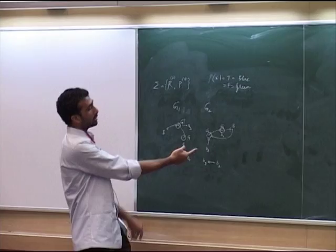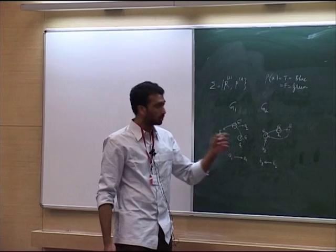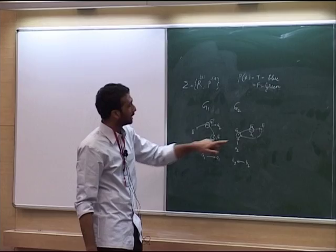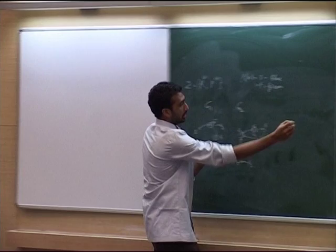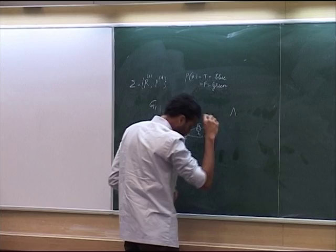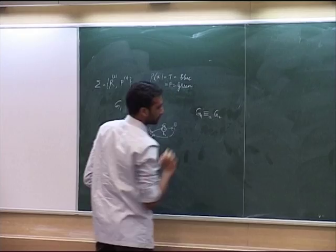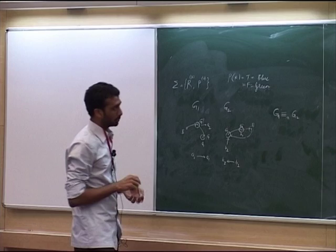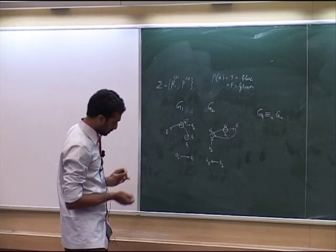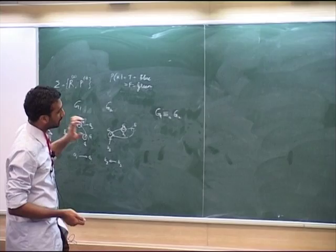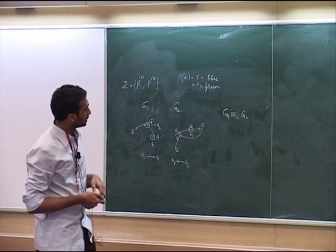In the one-round game, the duplicator has a winning strategy: just ensure the colors match — if the spoiler selects green, he selects green; if blue, blue. If the duplicator has a winning strategy in the n-round game between two structures, it is denoted G1 ≡_n G2. This also means these two structures are partially isomorphic — at the end of any number of rounds, the substructure induced by selected nodes in one graph must be isomorphic to the corresponding substructure in the other graph.